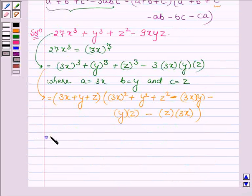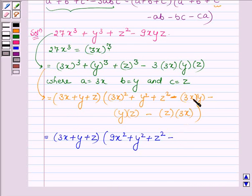Which is further equal to 3x plus y plus z and in the next bracket 3x whole square is 9x square plus y square plus z square minus 3 into x into y is 3xy minus yz minus 3xz.